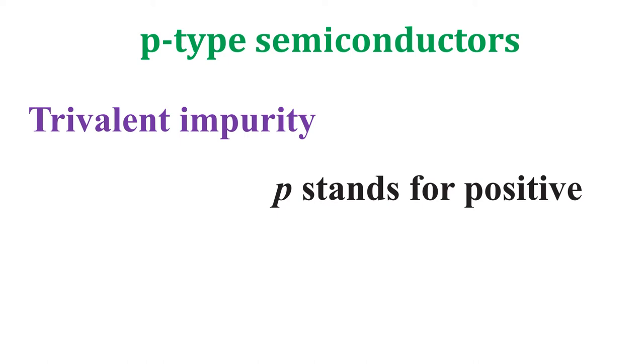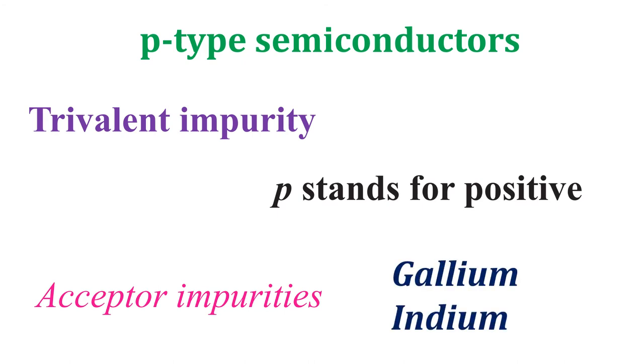P stands for positive. Typical examples of trivalent impurities are gallium and indium. Such impurities which produce p-type semiconductors are known as acceptor impurities because the holes created can accept electrons.